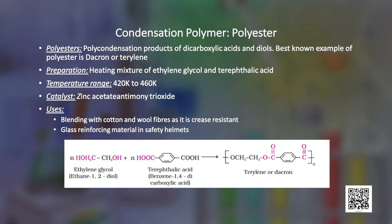Similarly, polymers possessing ester linkages are termed as polyesters. Terylene, also known as dacron, is manufactured by heating a mixture of ethylene glycol and terephthalic acid between 420 to 460 Kelvin in the presence of zinc acetate and antimony trioxide as a catalyst. The fiber of this polymer is crease resistant and is used in blending with cotton and wool fibers, and also as glass reinforcing material in safety helmets.